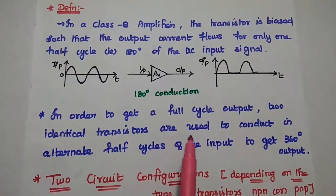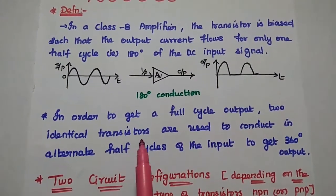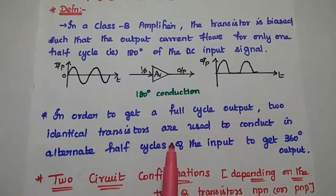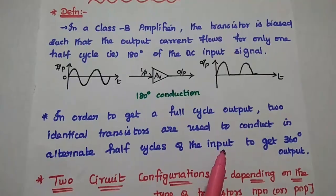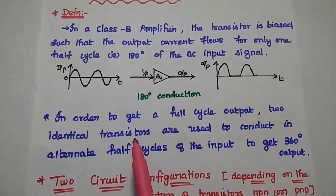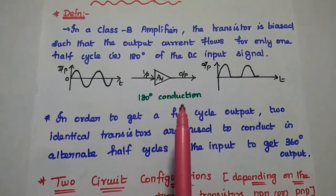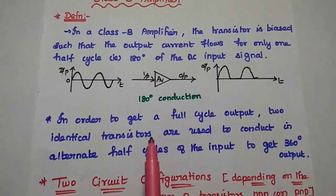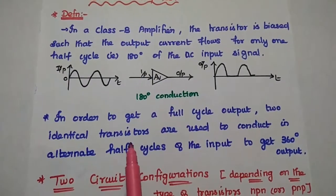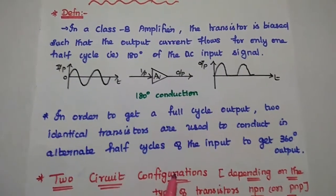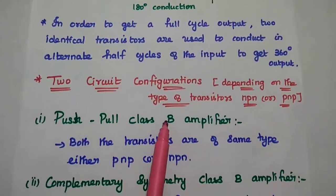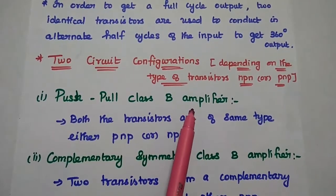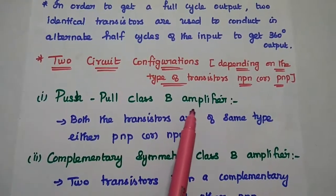In order to get a full cycle output, two identical transistors are used to conduct in alternate half cycles of the input. So if you are going to use two transistors in this circuit, then we can get the output for a full cycle — that is 360 degrees of AC input signal. There are two circuit configurations available based on the type of transistors used in this class B amplifier.